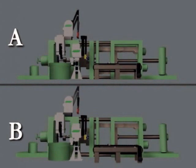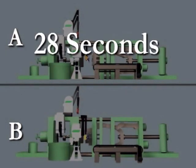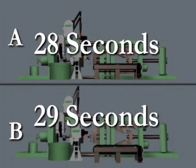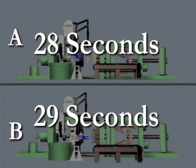The only difference is diecaster A runs a 28 second cycle, and diecaster B runs a 29 second cycle. Here is a breakdown of what each will produce in a year.